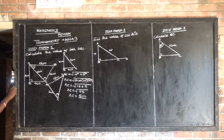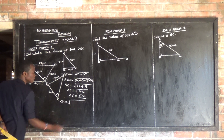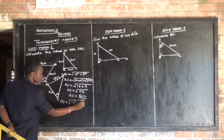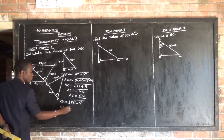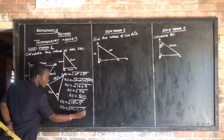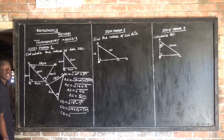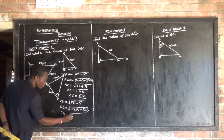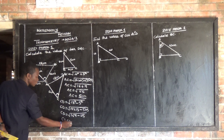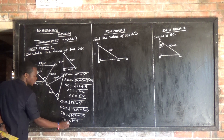So where is the 12 coming from? Using Pythagoras, CD equals square root of 13 squared minus 5 squared. 13 squared is 13 times 13. Minus 5 times 5. So CD equals square root of 169 minus 25, which is 144. CD equals the square root of 144, which is 12.